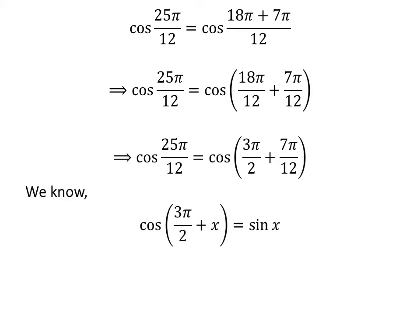We know the trigonometric identity: cosine of 3 times pi upon 2 plus x is equal to sine of x. The proof of this trigonometric identity is given in the video appearing in the upper right corner of this video, and the link is also given in the description section.